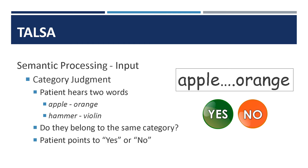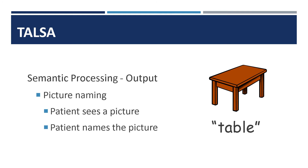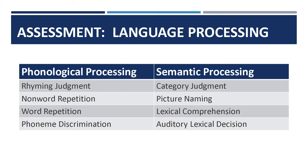The TULSA also has a number of tests that examine the semantic level of language processing. In the category judgment test, the patient hears two words, such as apple and orange, or hammer and violin, and indicates if the two words belong to the same category by pointing to yes or no. Picture naming is a common feature of aphasia tests, and in the TULSA, it provides information on the semantic output skills of the patient. When results of phonological tests, such as rhyming judgment or non-word repetition, are compared with semantic tests, like category judgment or picture naming, the patient's relative strengths and weaknesses are revealed. This gives the clinician the ability to pinpoint therapy goals for each individual patient and make the most of their therapy time.